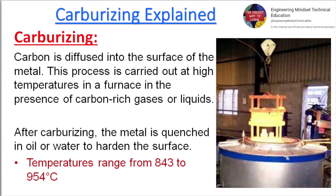After carburizing, the metal is quenched in oil or water to harden the surface. Temperatures range from 843 to 954 degrees Celsius.